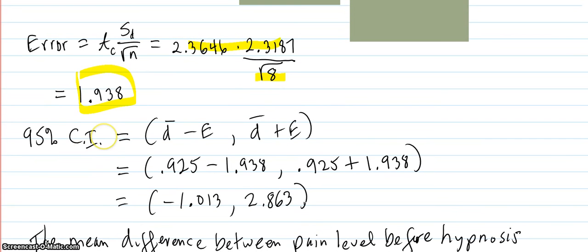So your 95% confidence interval for the differences, for the mean difference, is your normal design there. Put the numbers in. The average difference was 0.925, and you get this interval right here.